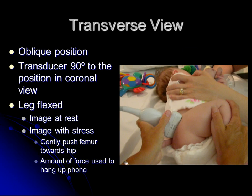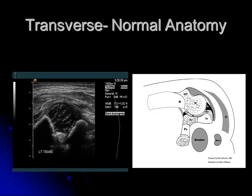For the transverse view, the baby is in an oblique position. You turn your transducer 90 degrees relative to the coronal view position. The leg is flexed, and you can image it at rest and then with stress. You gently push the femur towards the hip in a posterior maneuver, using roughly the same force you'd use to hang up a phone — you don't want to use too much force. On this view we're looking at the cartilaginous femoral head, the ossified portion of the ischium, the ossified portion of the pubic bone, and the ossified portion of the proximal femoral metaphysis. The lateral hip gluteal region is the most superior aspect of the image.